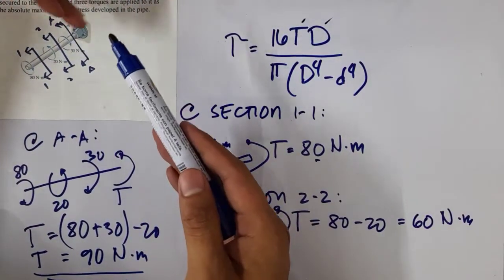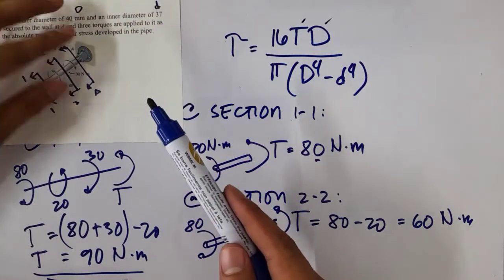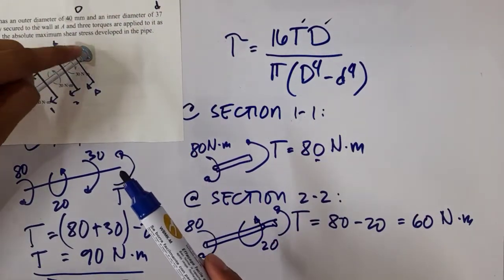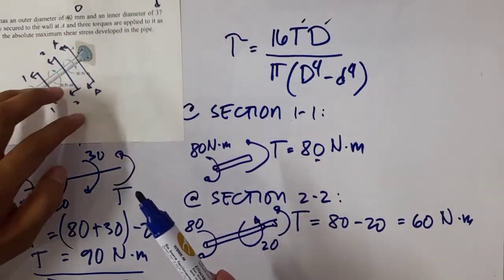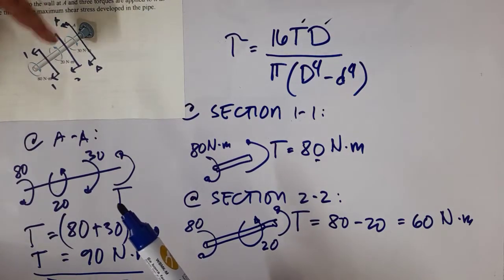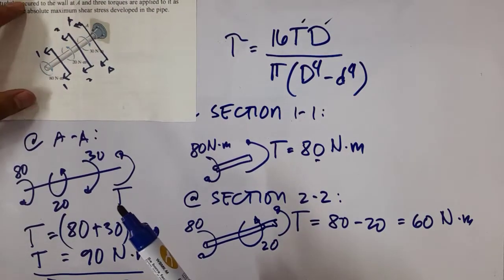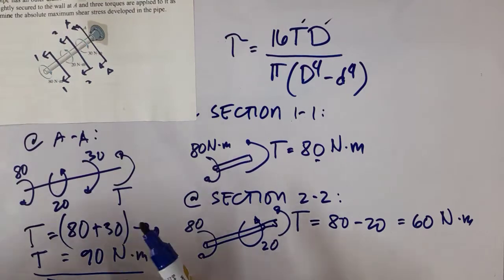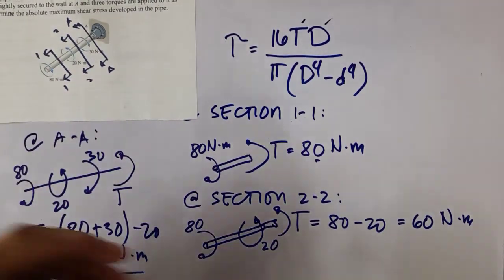We cannot use the right portion here because we don't know the reactions present at the wall. That's why we used the free end, or the left portion, to determine the maximum torque.